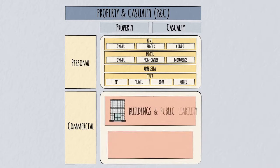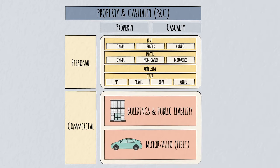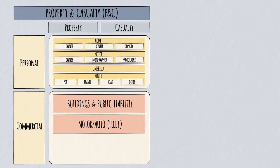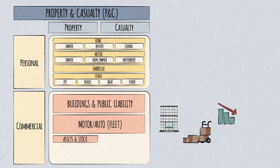Buildings and motor risks appear again in commercial policies, as well as a whole range of risks specific to businesses. Property risks include a company's stock and assets, and also financial loss due to business interruption or customers not paying.